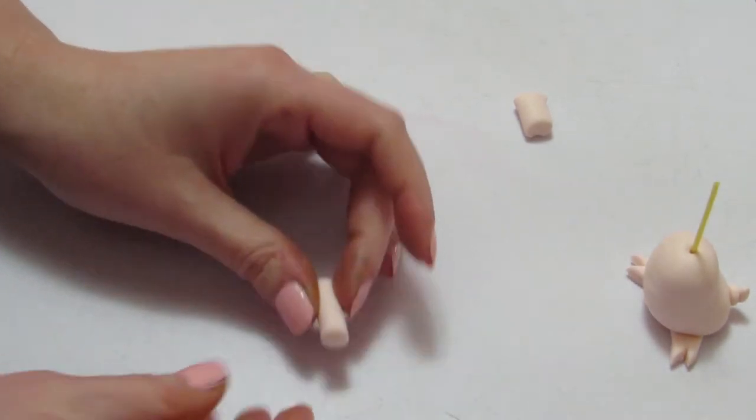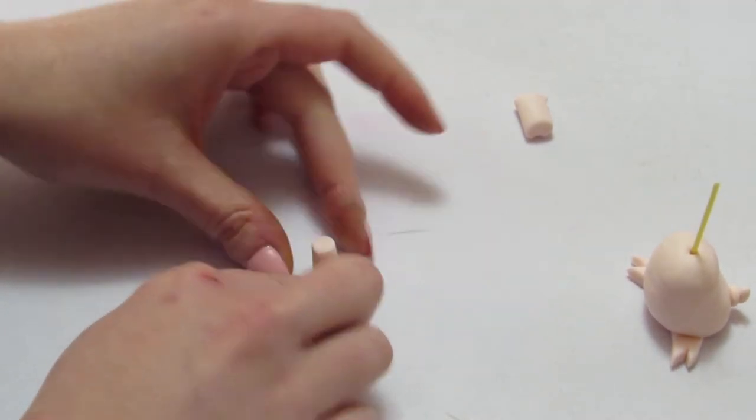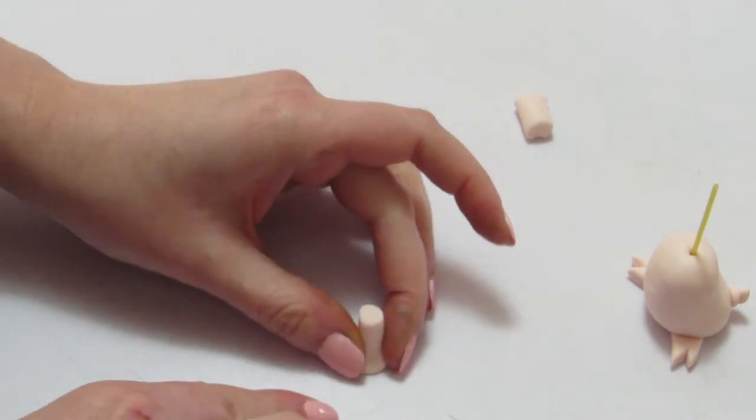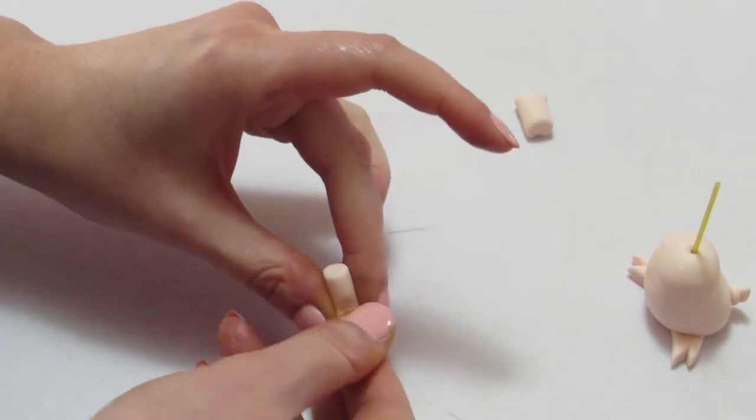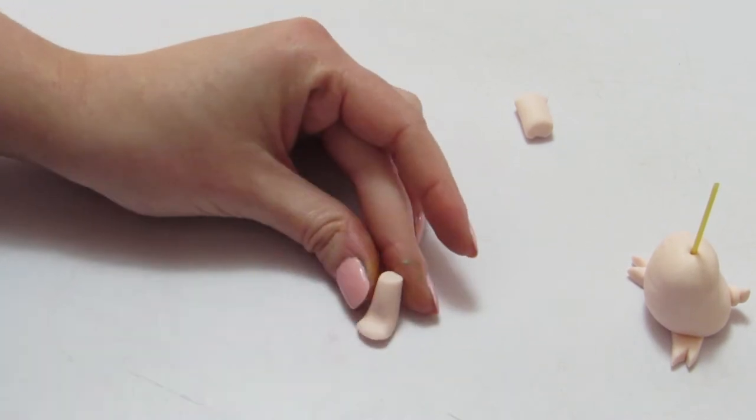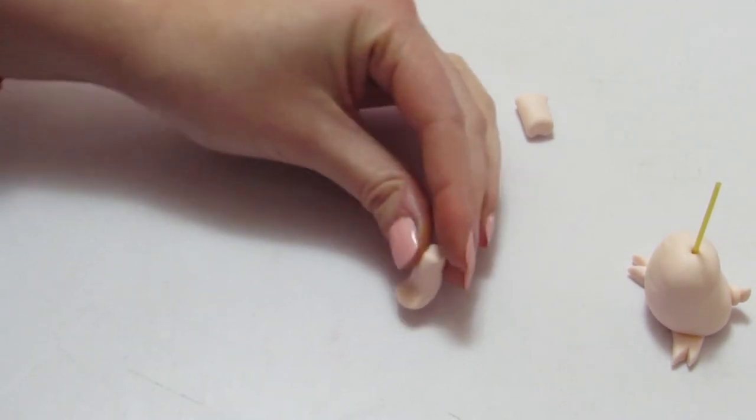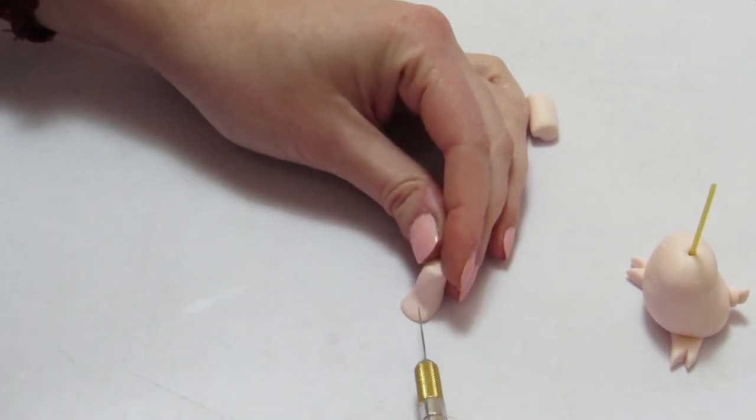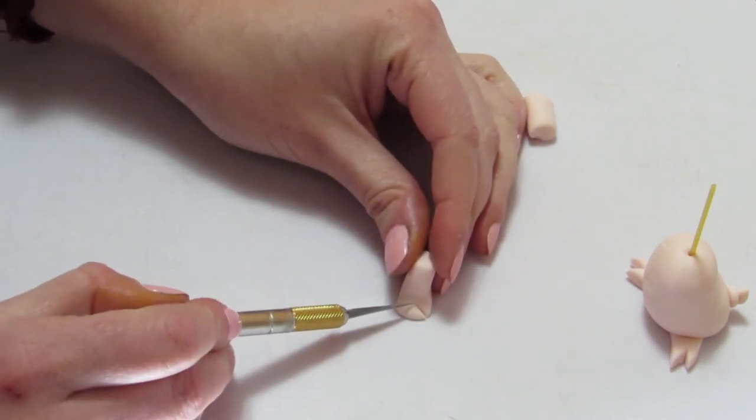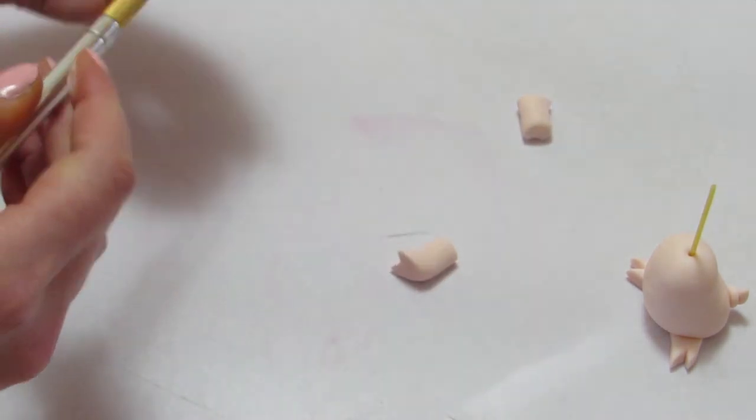To do the front legs, you're going to roll out two cylinders. I press down on the front and bend it outward so it looks like a foot. So it has that kind of a bend and a foot look to it. And then again, like you did with the back feet, you're going to cut a triangle out of the toe to give him his little hoof.